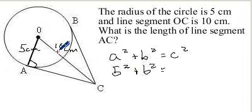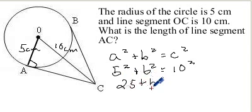And we know the long side. We know the hypotenuse is 10 squared. So 5 squared is 25 plus B squared equals 10 times 10 which is 100.